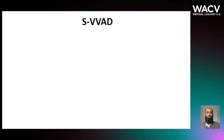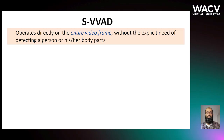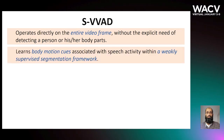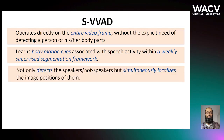In this study, we present a novel visual voice activity detection method named SVWatt. SVWatt operates directly on the entire video frame without the explicit need of detecting a person or their body parts. It learns body motion cues associated with speech activity within a weakly supervised segmentation framework. SVWatt not only detects speakers or non-speakers but simultaneously localizes their image positions.